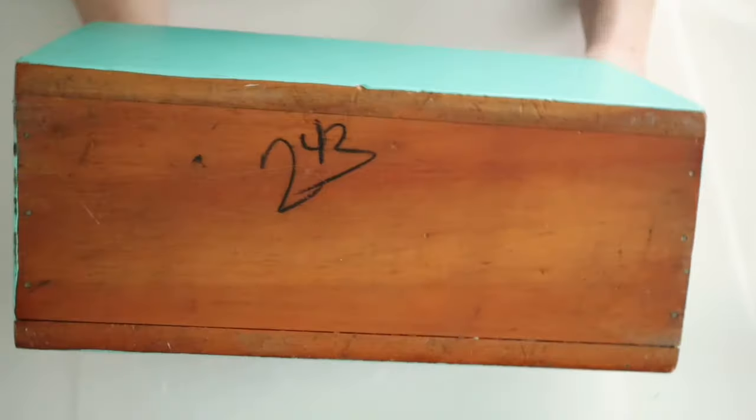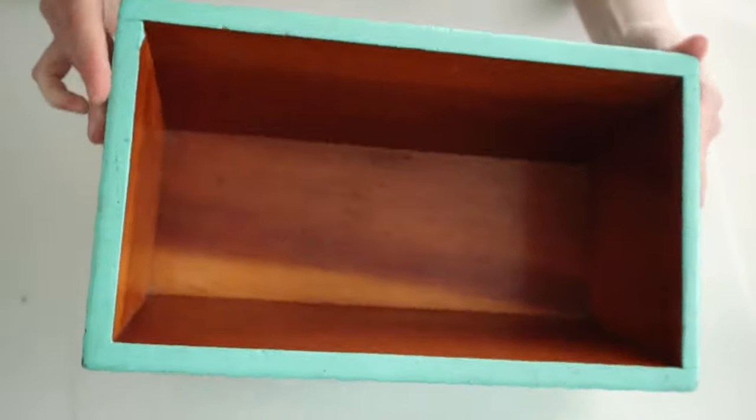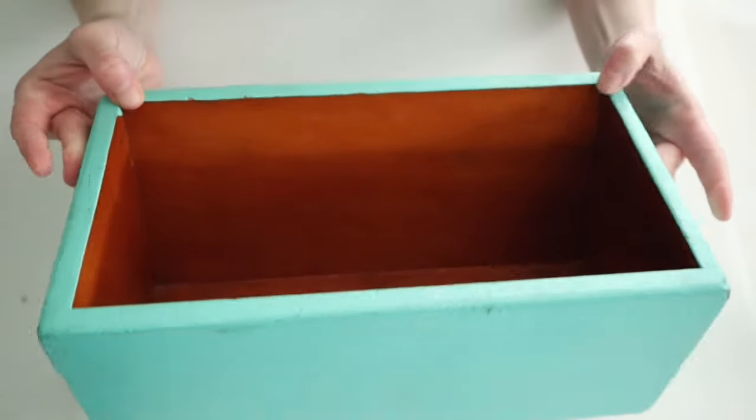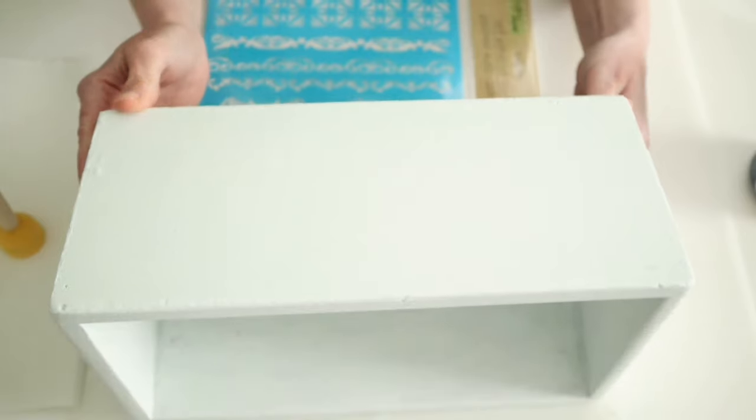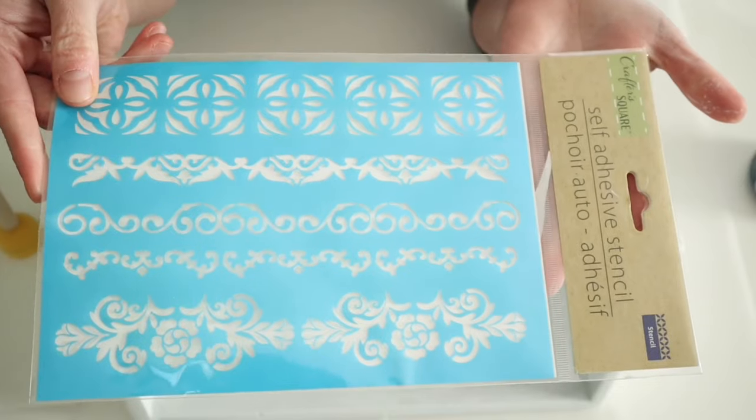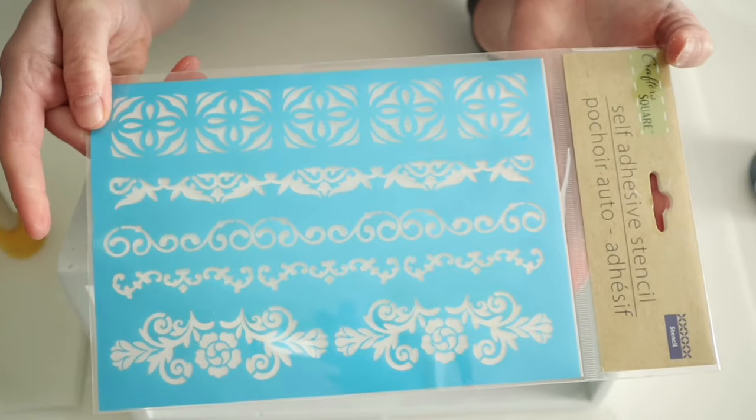I picked up this wood box from my local thrift store, and you can see it's already been painted. I kind of wish it wasn't, but since it was, I went ahead and gave it three coats of my white Waverly chalk paint. And I'll also be using this Dollar Tree stencil set for this project as well.